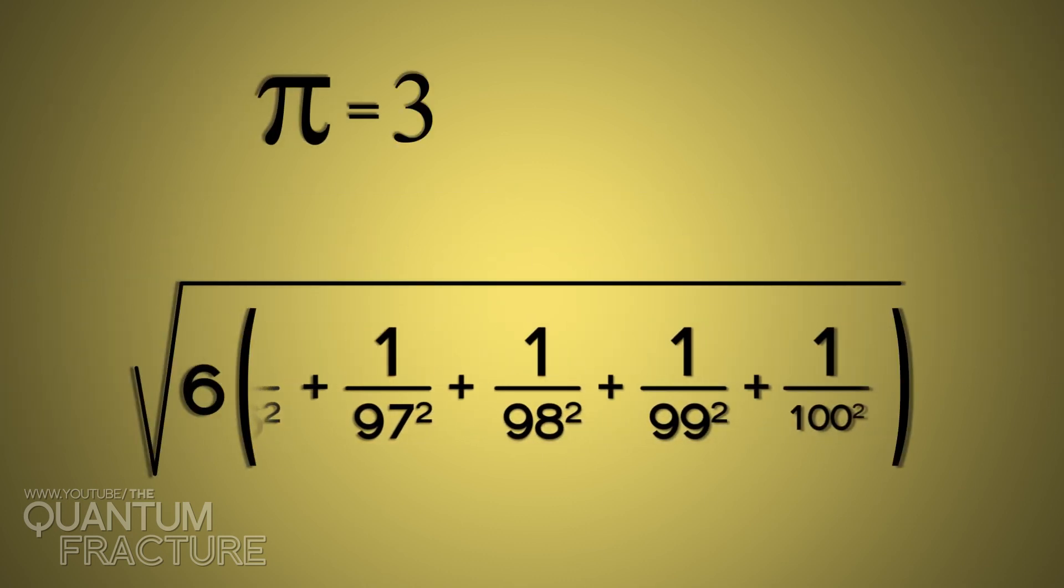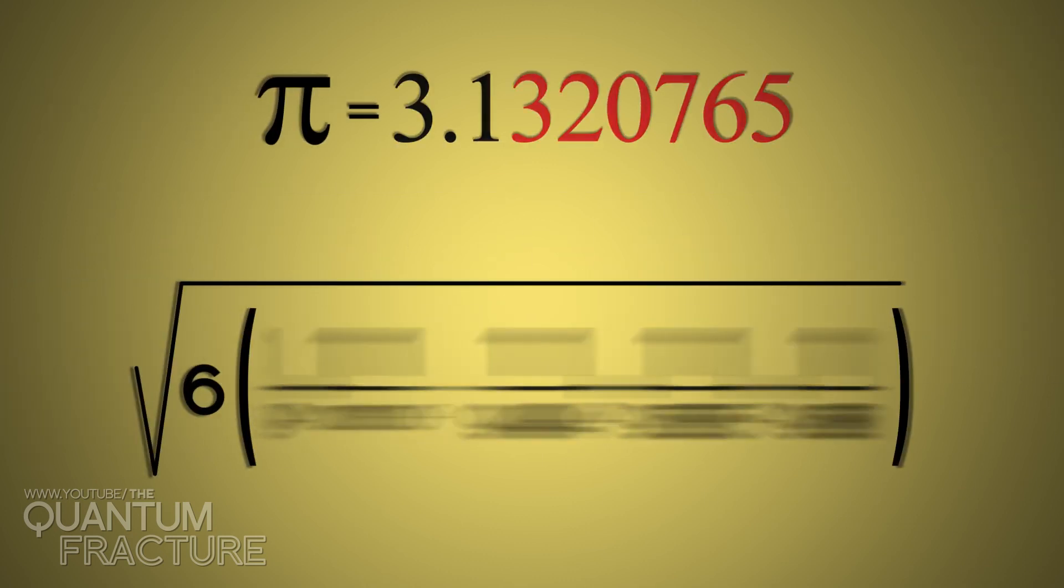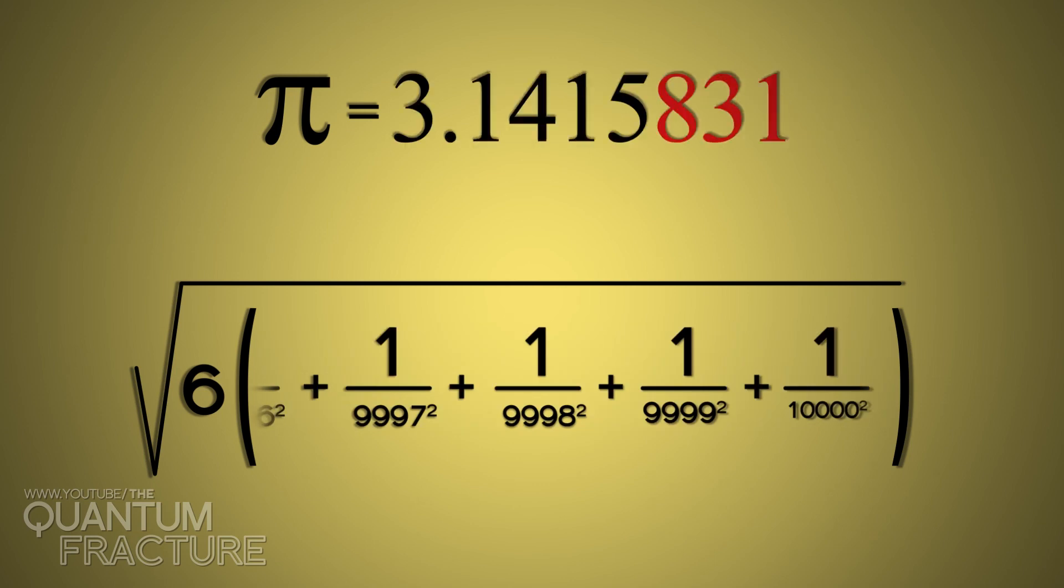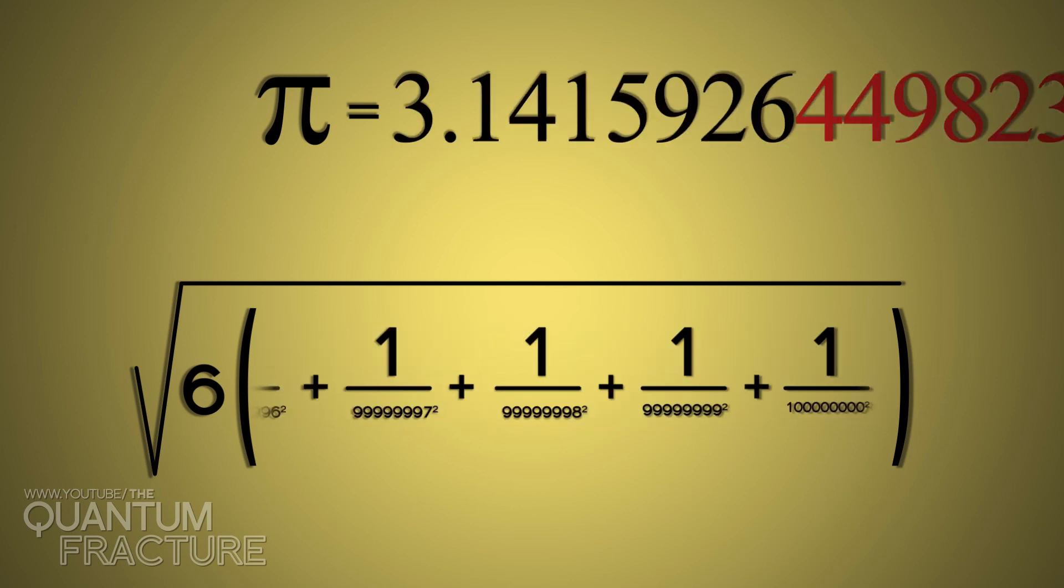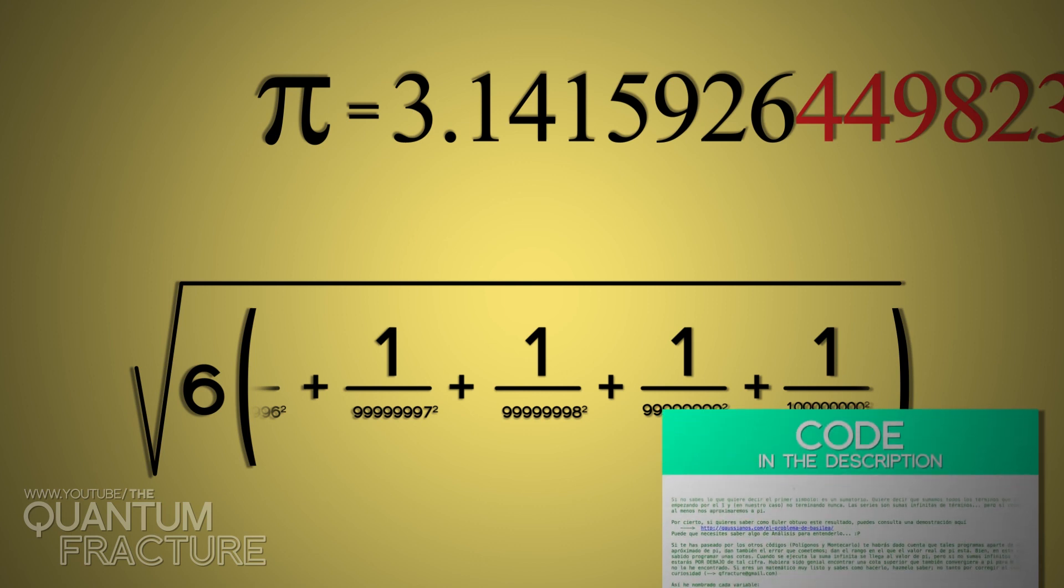Adding the first 100 terms, we obtain the two first figures. With 10,000, we get up to the fifth one, and we obtain the eighth one with a billion terms.